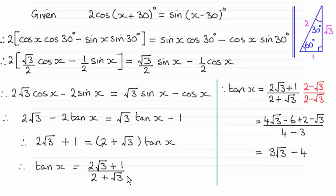Next, I need to rationalise the denominator here. So multiply top and bottom by 2 minus root 3. Just expand out the top, expand out the bottom, and that will take you to what we require: 3 root 3 minus 4.